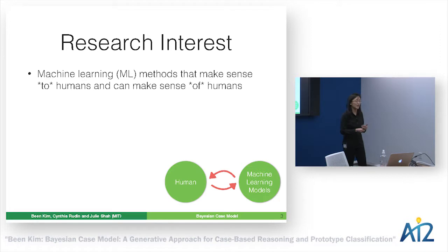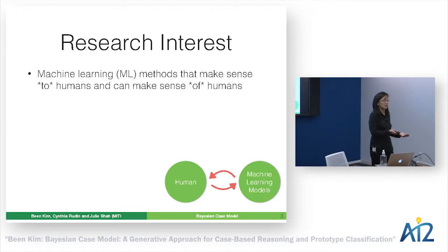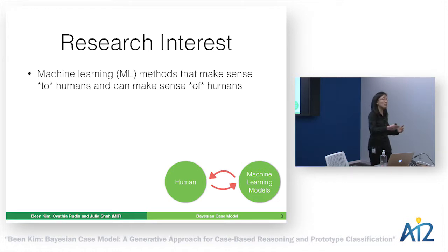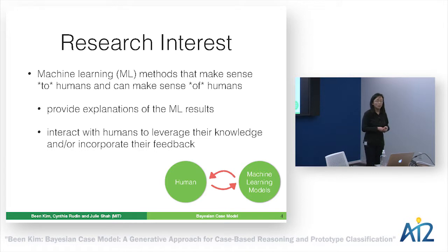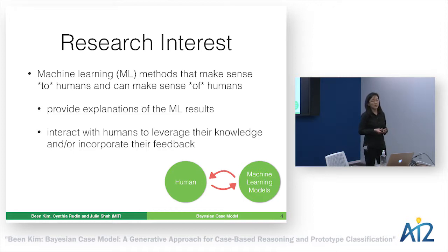Also, machine learning isn't perfect. There are years of accumulated experience from human domain experts — such as disaster responders — that machine learning models just don't have. So on top of that, we need to make sure machines can make sense of humans so we can incorporate their feedback back into machine learning systems.